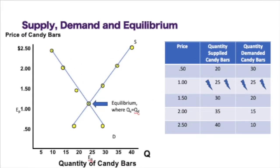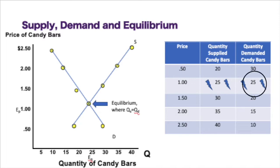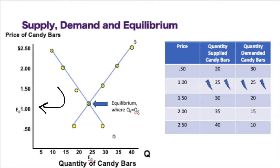Looking at the graph, you can see on the y-axis we have the price of candy bars, and on the x-axis we have quantity of candy bars. The quantity supplied is 25 and the quantity demanded is 25, equaling each other at the dollar price. So our equilibrium price is $1 and our equilibrium quantity is 25. Our equilibrium point is where quantity supplied equals quantity demanded.